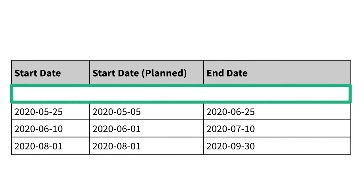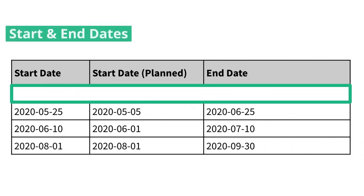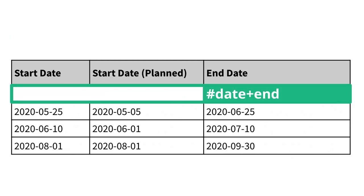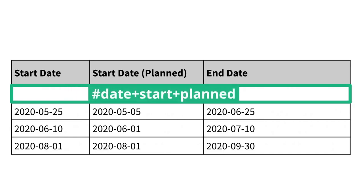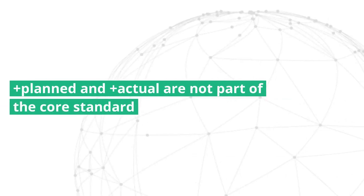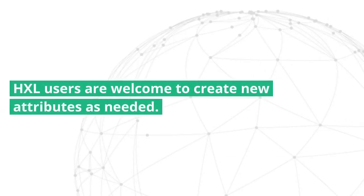Finally, let's look at dates. For data about the start and end date of an activity, you could use hashtag date plus start and hashtag date plus end. If you need to distinguish between planned and actual dates, you could use hashtag date plus start plus planned and hashtag date plus start plus actual. The attributes planned and actual are not part of the core HXL standard, but HXL users are always welcome to create new attributes as needed.